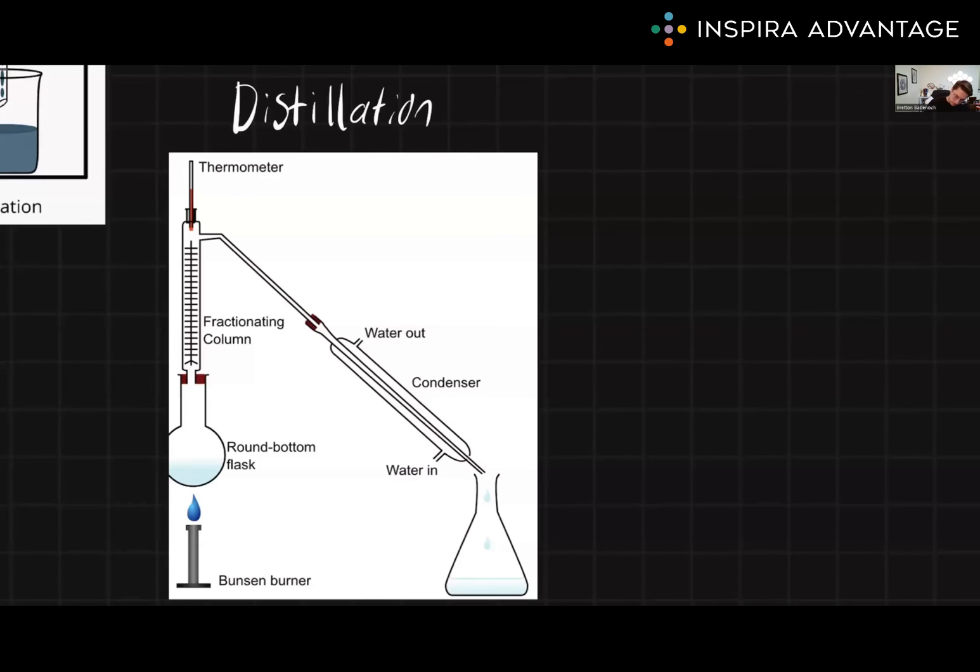And then finally, what I have a picture of here is fractional distillation. So this should be used when the boiling points of liquids are really close to each other, typically within 25 degrees Celsius. Fractional distillation is very similar to simple distillation, but it allows for a more refined separation of liquids based on boiling points.